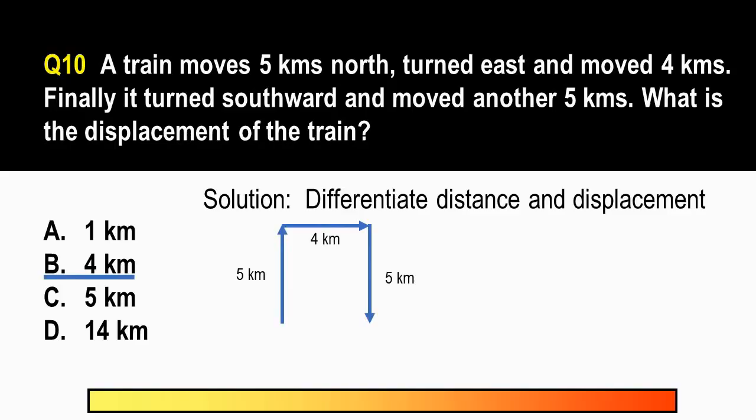The correct answer is letter B, 4 kilometers. So recall the concepts of distance versus displacement. Again, distance is a scalar quantity and distance refers to how much ground an object has covered during its motion. Whereas displacement naman is a vector quantity which refers to how far is the object from its initial position. So dito makikita natin that the train covered 5 kilometers and then 4 kilometers and another 5 kilometers for a total of 14 kilometers. So this figure, the 14 kilometers refers to the distance. Yung displacement ay yung overall change in the position of the object. And here, since the train moved 5 kilometers pataas, 4 kilometers pa kanan, and then 5 kilometers pababa ulit. The displacement thus is only 4 kilometers. Ito yung net movement niya. It's only 4 kilometers.